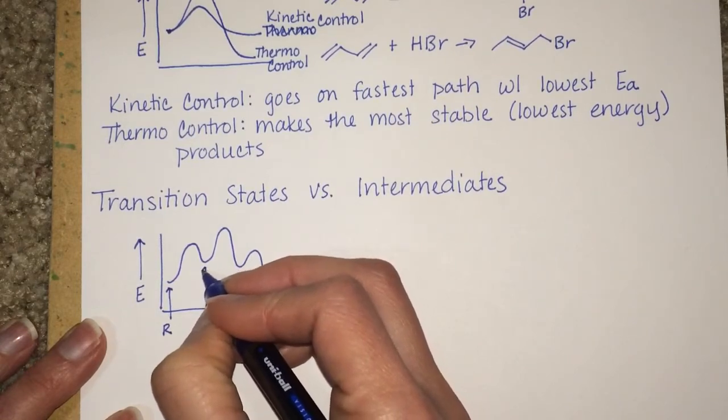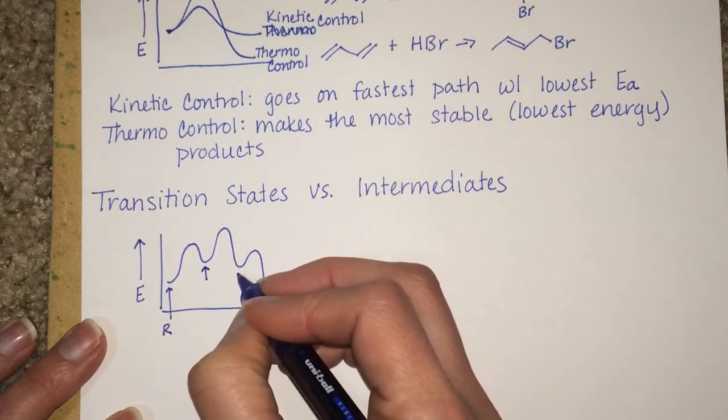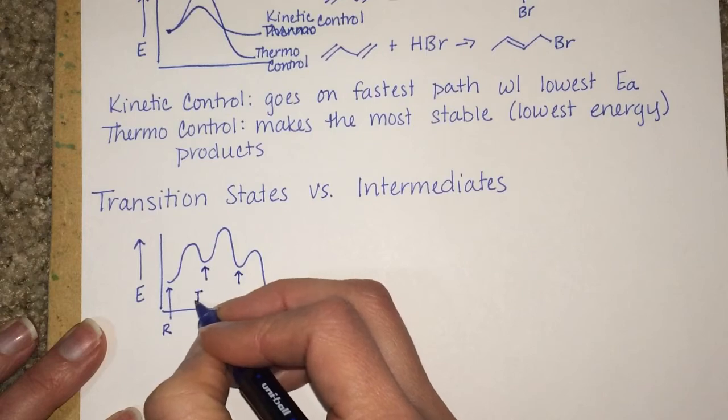And you can see that there's multiple activation energies along the way. These local minima, right here, are called intermediates.